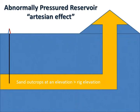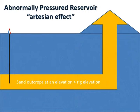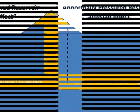An abnormally pressured reservoir might be abnormally pressured because of the Artesian effect. In this example, we see a sandstone that outcrops at an elevation greater than the rig elevation. Therefore, the density of the fluid in the reservoir might not change. However, the height of the column of fluid — the depth — would change, as the outcrop is much higher than the drilling rig, as it might outcrop in the mountains.